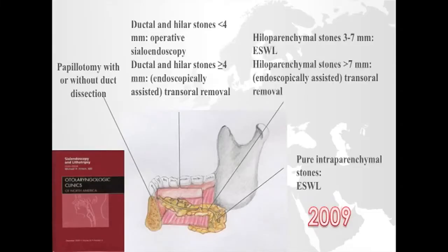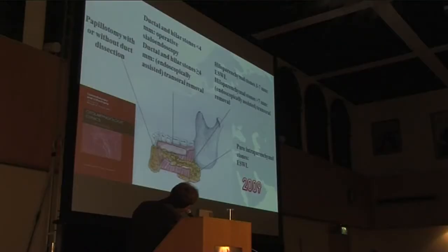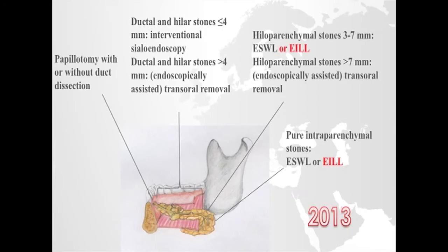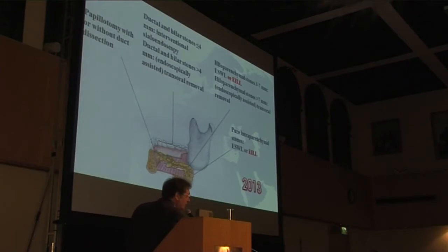Four years ago, I described my indications for submandibular stones, saying that transoral surgical removal of stones is indicated for all ductal submandibular stones that are at least 4 mm. Also, hiloparenchymal stones more than 7 mm may undergo transoral endoscopically assisted removal. Four years after, I simply modified my indications and started with endoscopic intracorporeal laser lithotripsy as we move towards sialendoscopy.